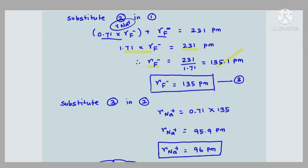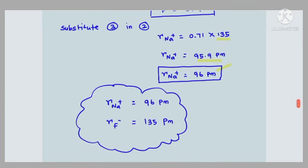The final answers: the radius of the sodium ion (Na⁺) is about 96 picometers, and the radius of the fluoride ion (F⁻) is about 135 picometers. This is how to calculate ionic radius using Pauling's method. I hope you understood how to solve problems based on Pauling's method. Thank you.